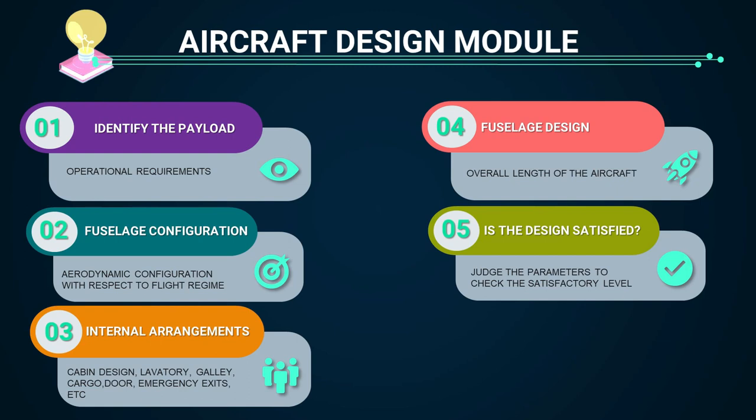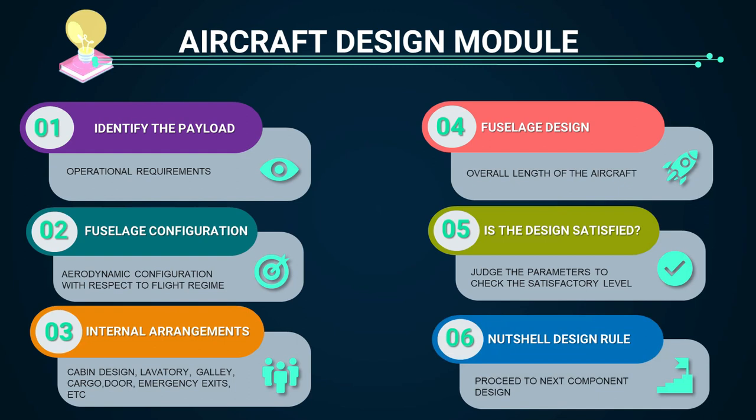Fineness ratio plays a very important role while designing a fuselage. It is the ratio between the length of the fuselage to the diameter of the fuselage. Once satisfied, go ahead with the next component. If not, revise and check the error.